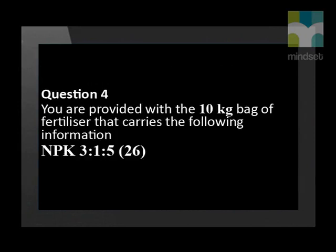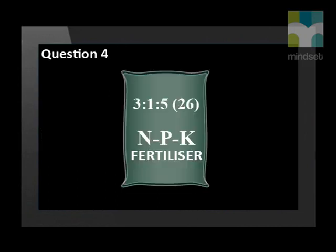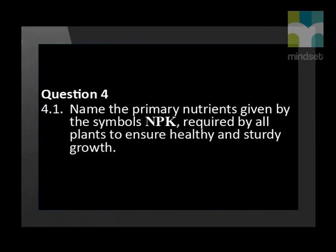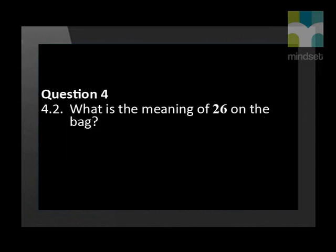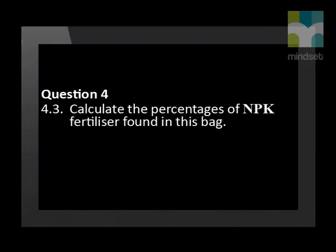Question 4. You are provided with a 10 kilogram bag of fertilizer that carries the following information: NPK 3 to 1 to 5 and bracket 26. This is what the bag looks like. Name the primary nutrients given by the symbols NPK, required by all plants to ensure healthy and sturdy growth. What is the meaning of 26 on the bag? Calculate the percentages of NPK fertilizer found in this bag.